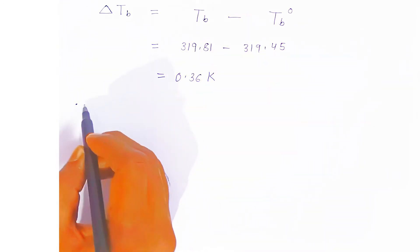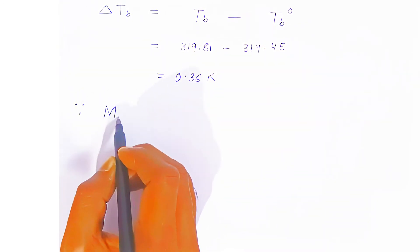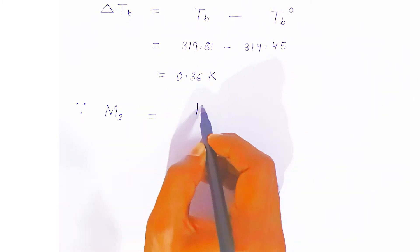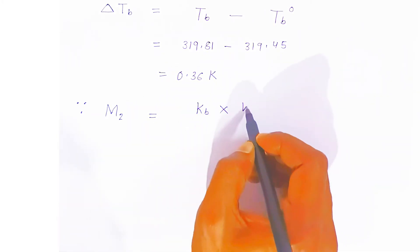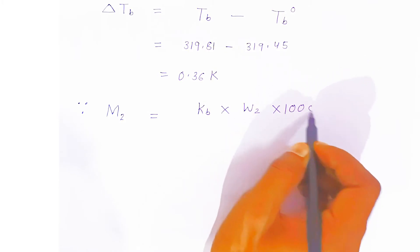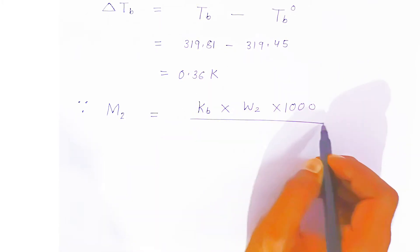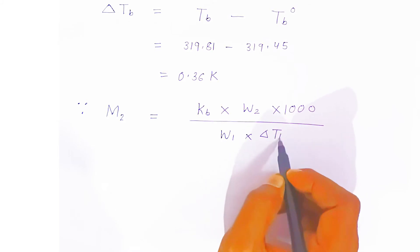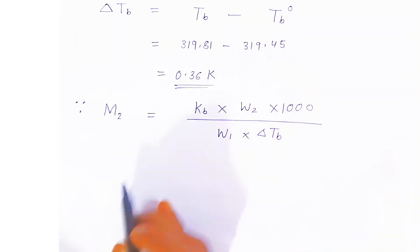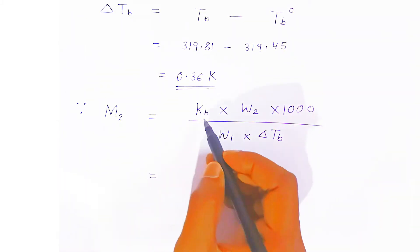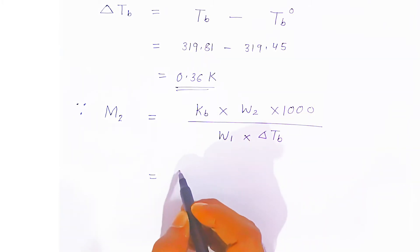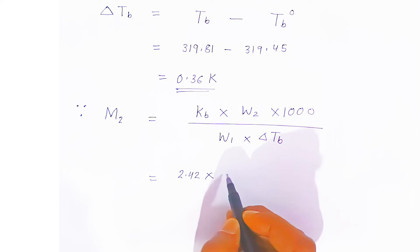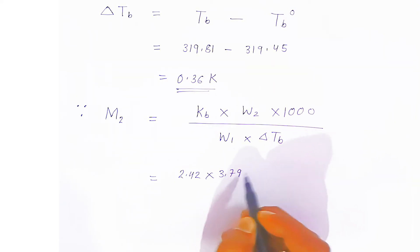Now using the formula: M₂ = Kb × W₂ × 1000 / (W₁ × ΔTb). Substituting the values: Kb = 2.42, weight of solute W₂ = 3.795 gram, multiplied by 1000, divided by weight of solvent (100 gram) multiplied by ΔTb (0.36). To remove the decimal, we rewrite as 2.42 × 3795 divided by 36.